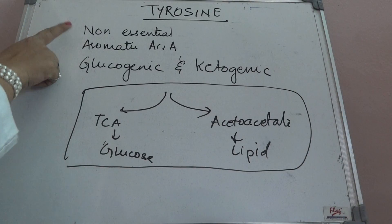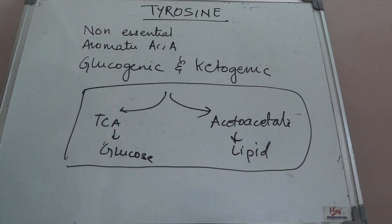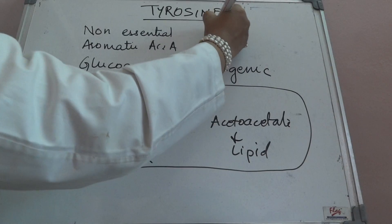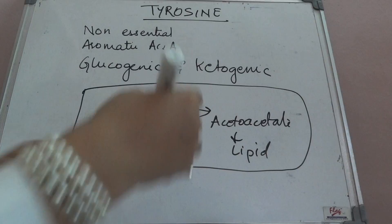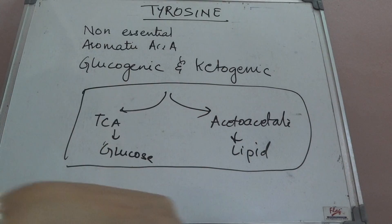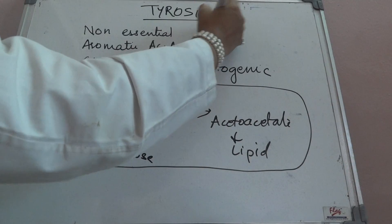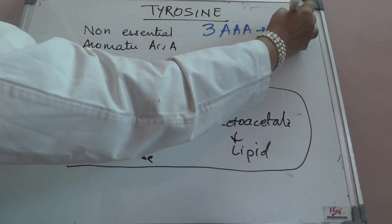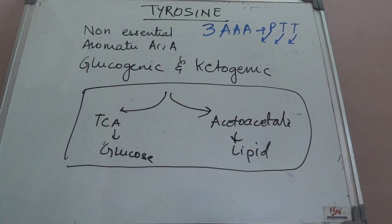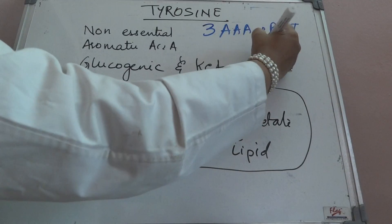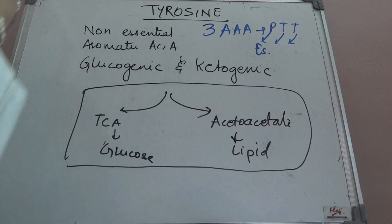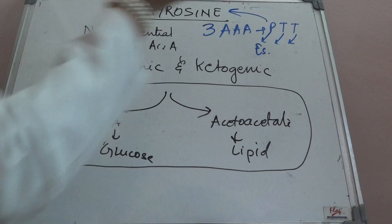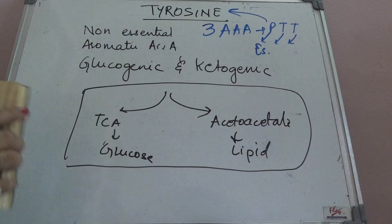Tyrosine is a non-essential aromatic amino acid. The three aromatic amino acids are PTT — that is phenylalanine, tyrosine, and tryptophan. Phenylalanine is an essential amino acid, and it helps in the formation of tyrosine, as we have already seen.